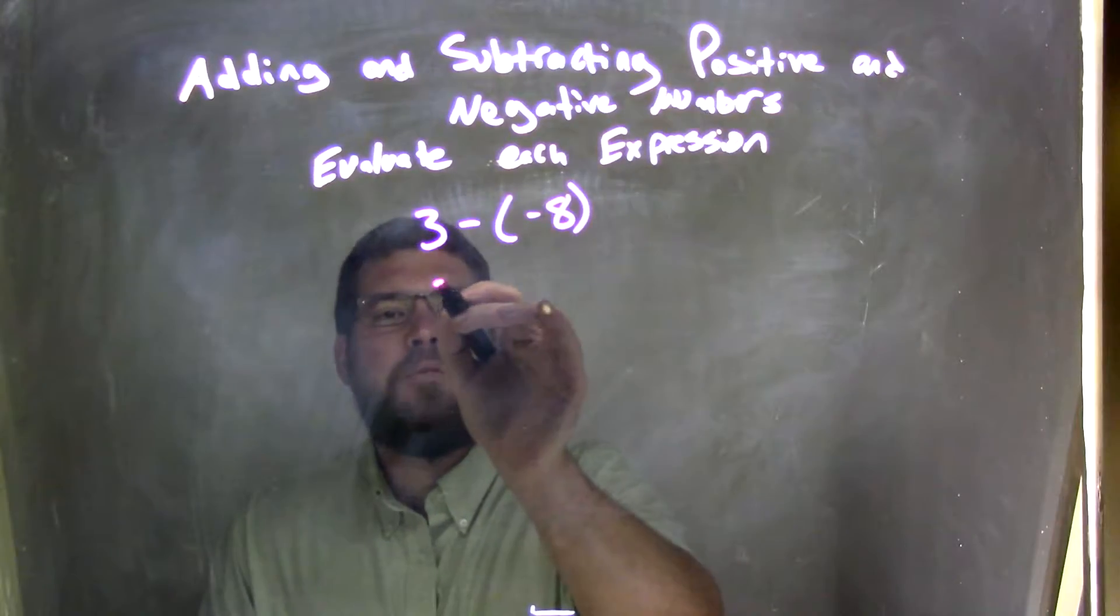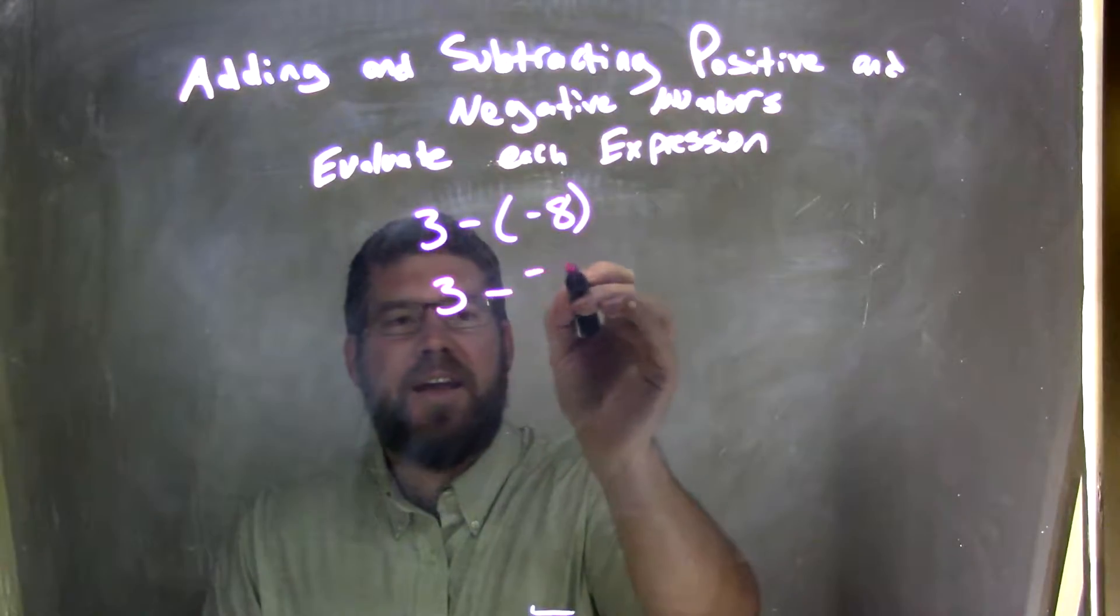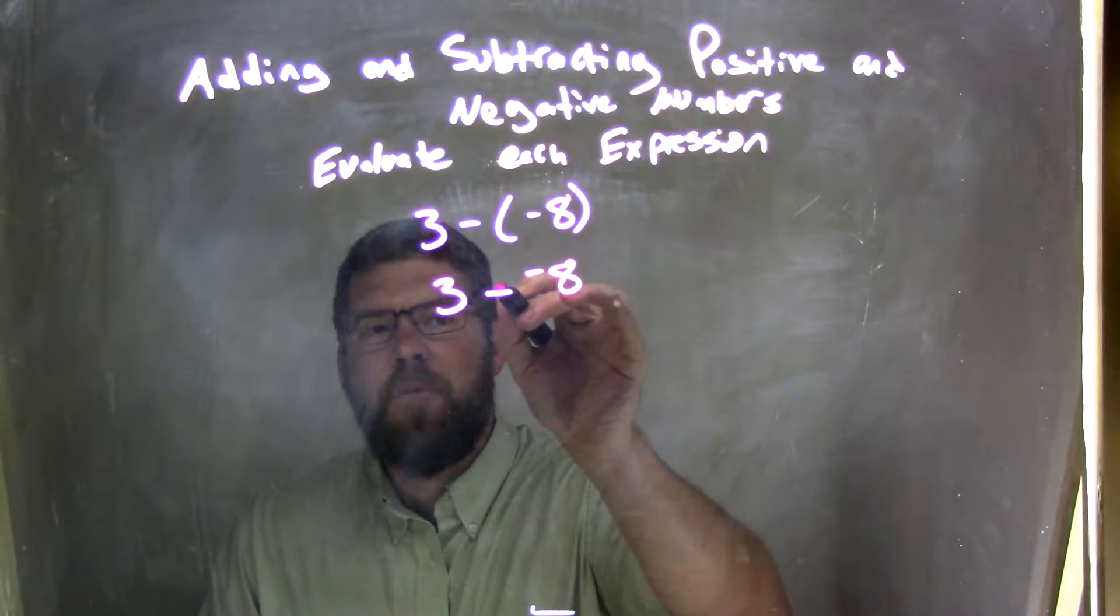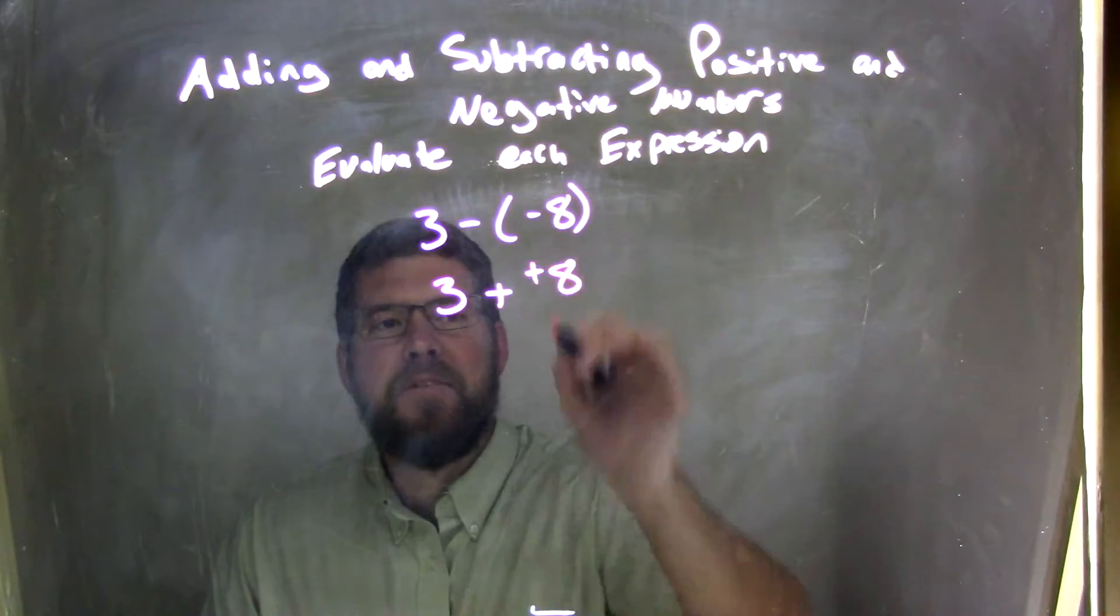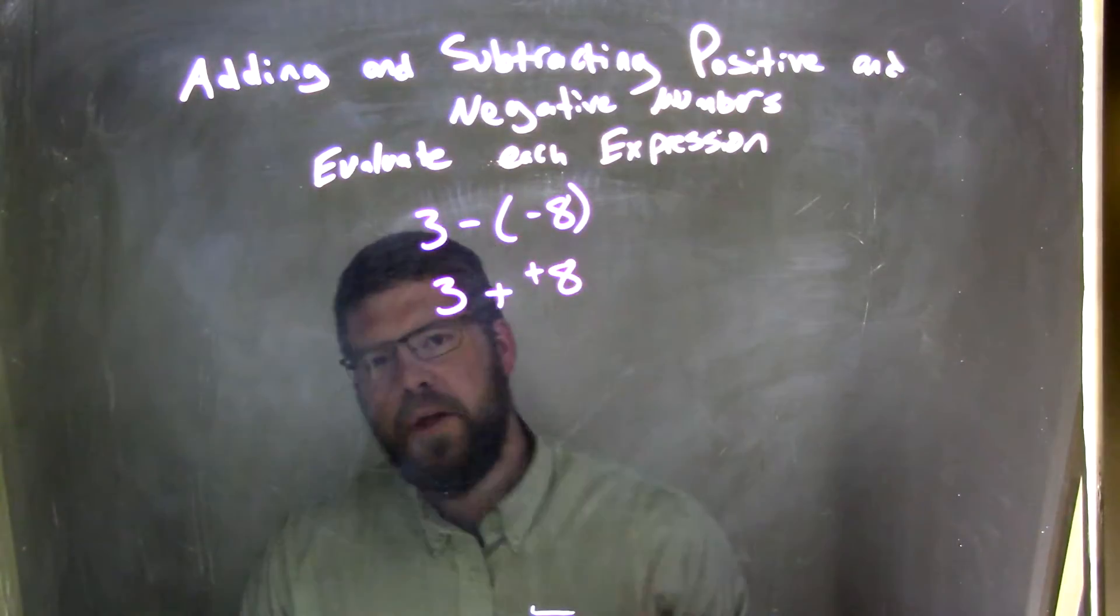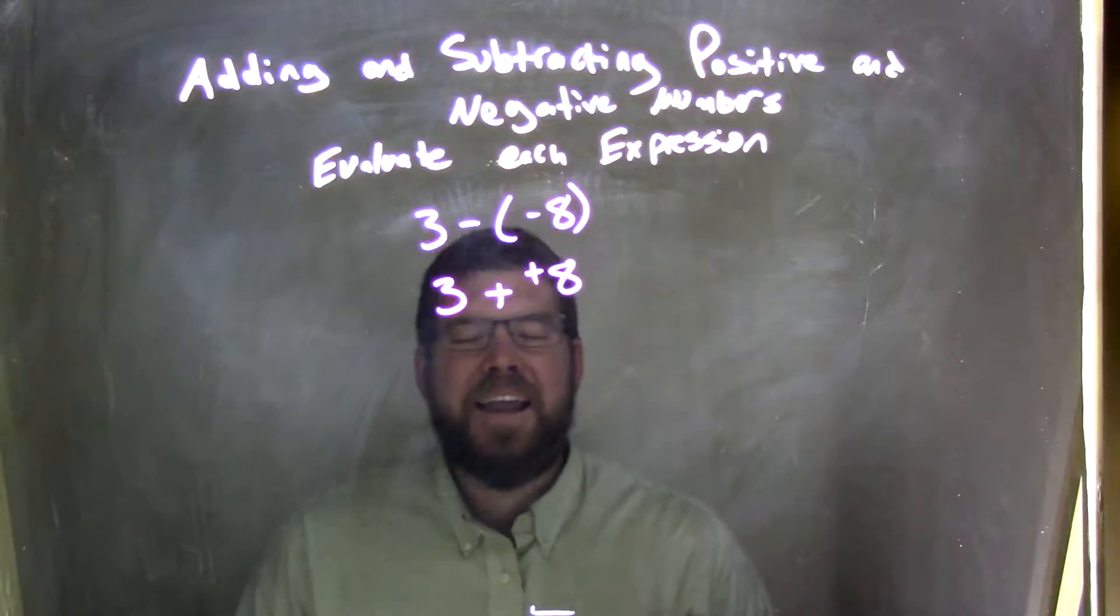So if I have 3 minus negative 8, that is the same thing as, now watch me, adding, making one line, adding a positive. So I take that minus and negative, and I make two more lines that go in pairs, and adding a positive.